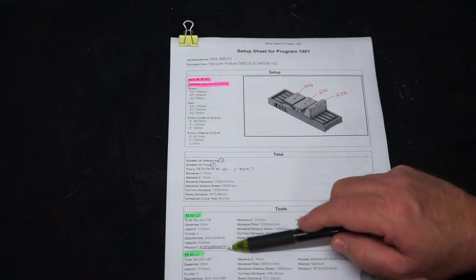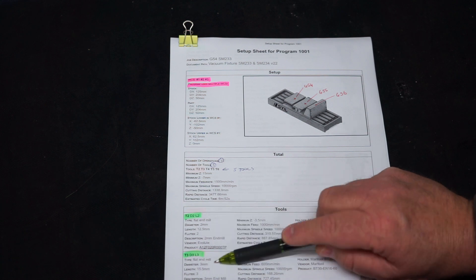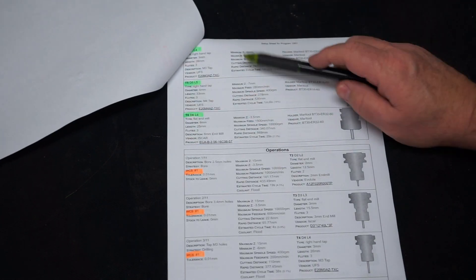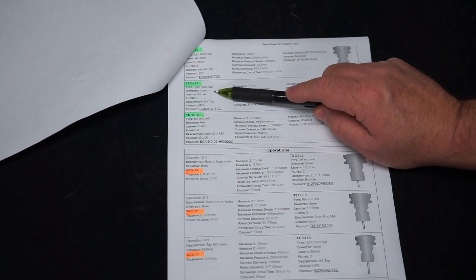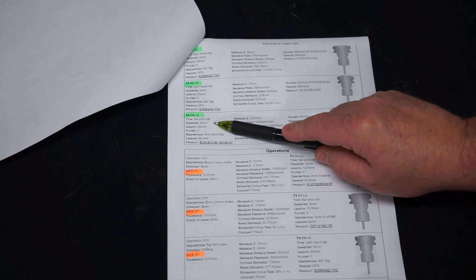three mill diameter, then we've got a right-hand tap, three mill tap, so M3, M4, right-hand tap, and an end mill of six millimetres.